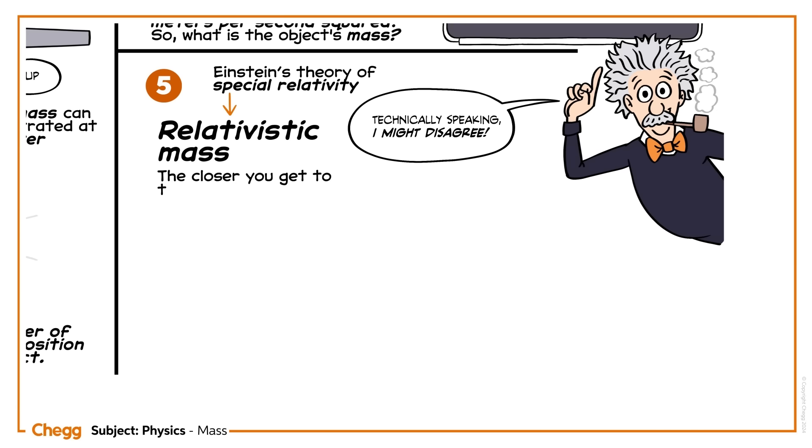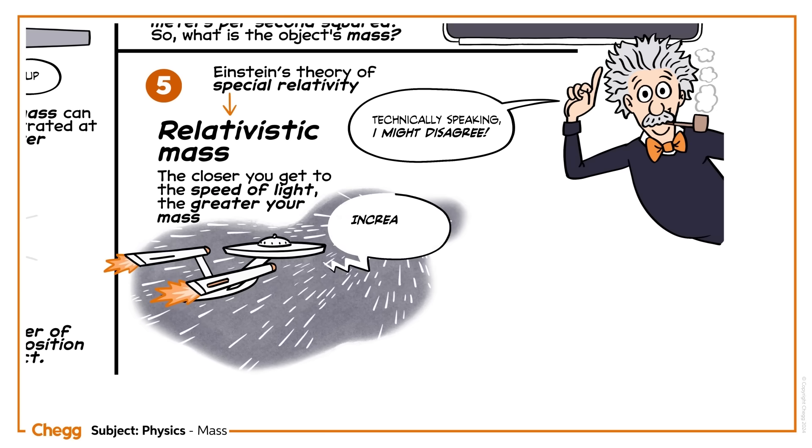He said that the closer you get to the speed of light, the greater your mass. So, if you were on a moving spaceship, your mass would change depending on how fast you were going.